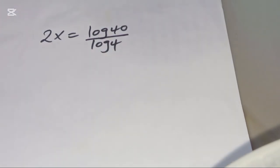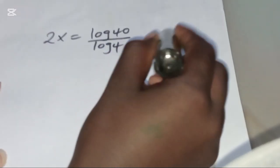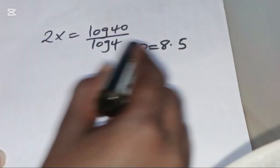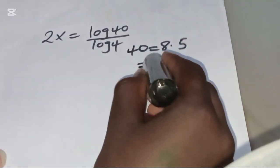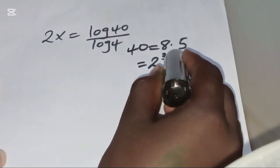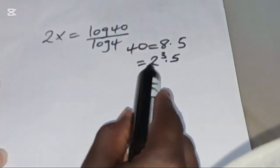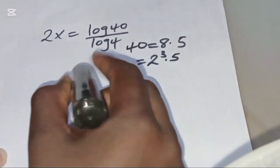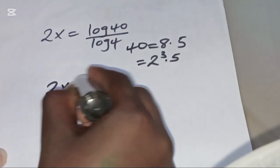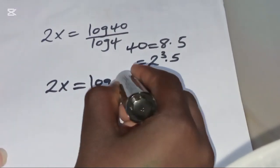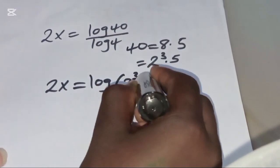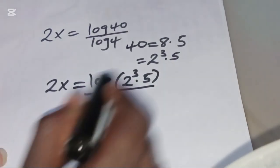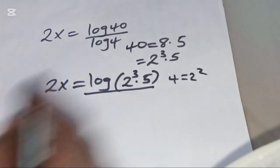We can express 40 as 8 multiplied by 5, and 8 can be expressed as 2 to the power 3. So 40 = 2³ × 5. Substituting, we have 2x = log(2³ × 5) divided by log(4), and we can express 4 as 2².